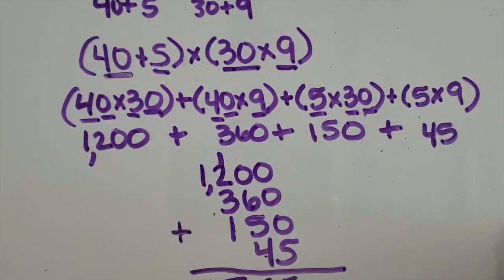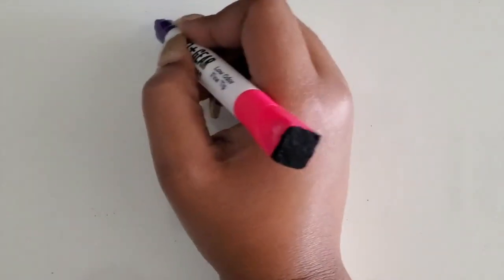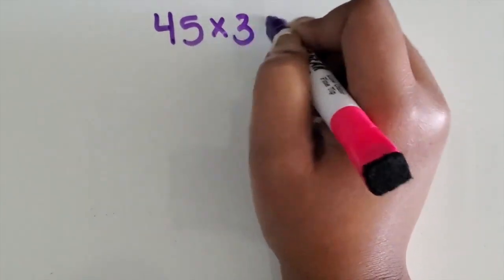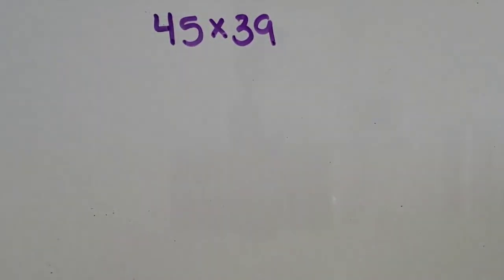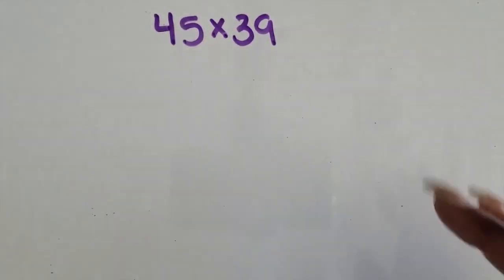Now I'm going to show you how we can decompose one of those numbers differently than by place value. This is part of a progression for students who are ready for it. The easier way is to decompose by place value, but students who have good number sense and are flexible with their numbers can decompose these numbers in different ways.